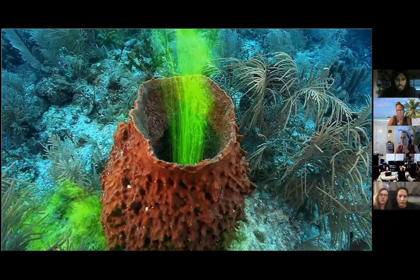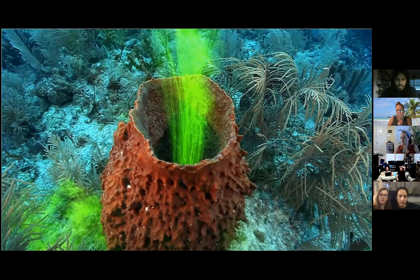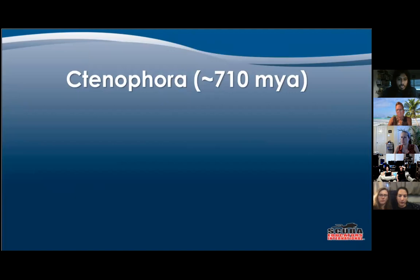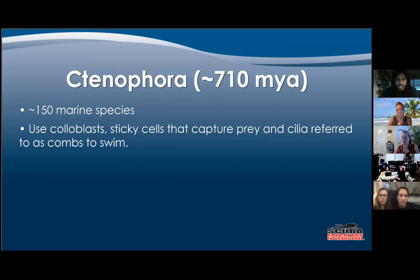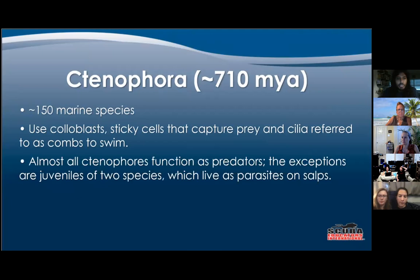Here you can see how they use water flow to filter-feed through the water. Then we have Ctenophora — the comb jellyfish. There are 150 marine species and they're purely marine. They use colloblasts or sticky cells that capture prey, or cilia referred to as combs to swim. They're the largest animal to use cilia. Almost all Ctenophoras function as predators, with the exception of two juveniles which live as parasites on salps.